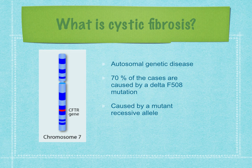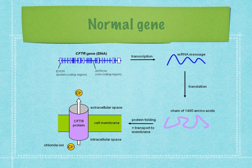Cystic fibrosis is an autosomal genetic disease, which means that it's not sex-linked. 70% of cases are caused by a mutation on chromosome 7. It's caused by a mutant recessive allele, and the mutation is a Delta F508 mutation. The normal gene, called the cystic fibrosis transmembrane conductance regulator — the CFTR gene — normally produces a protein of 1,480 amino acids. This folds into a protein called the CFTR protein that actively transports chloride ions across the epithelial membranes, out of the epithelial cells.